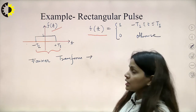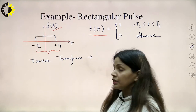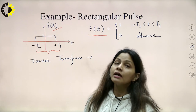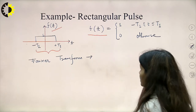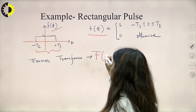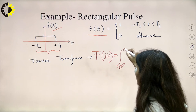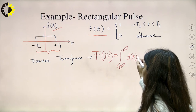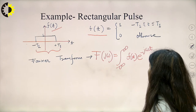This is a very important function in signal analysis and systems — the rectangular function is considered very important. Let us calculate the Fourier transform for this given function. We apply the formula: F(jω) = integral from minus infinity to plus infinity of f(t) · e^(−jωt) dt.